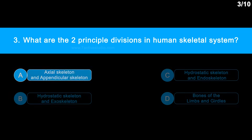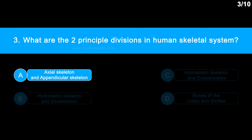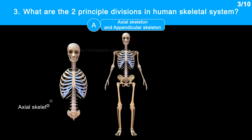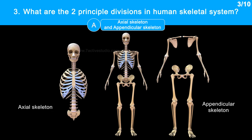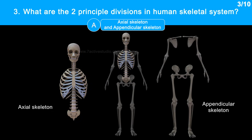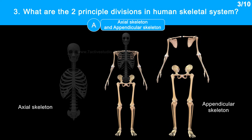The correct answer is option A, axial skeleton and appendicular skeleton. The human skeletal system can be divided into two main parts: the axial and the appendicular skeletons. The axial skeleton forms the central axis of the body, while the appendicular skeleton includes girdles and limbs.